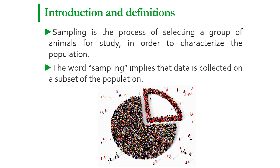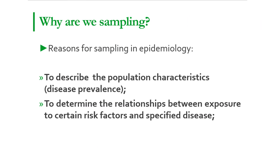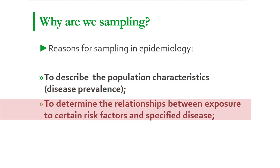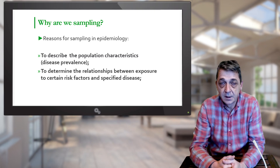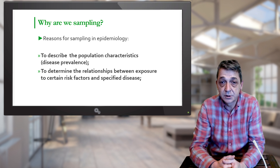With designing the sample, we know beforehand how precise and accurate these results will be. There are two main reasons why sampling is often used in epidemiology. The first is to describe the population characteristics, disease prevalence, or some production parameters, or to determine the relationships between exposure to certain risks and the occurrence of some disease. As you remember, those are the same objectives of the epidemiological studies.